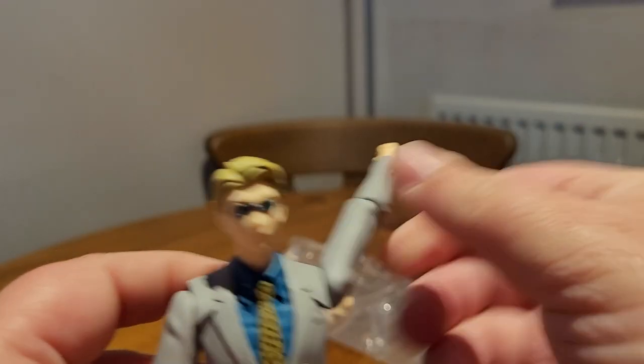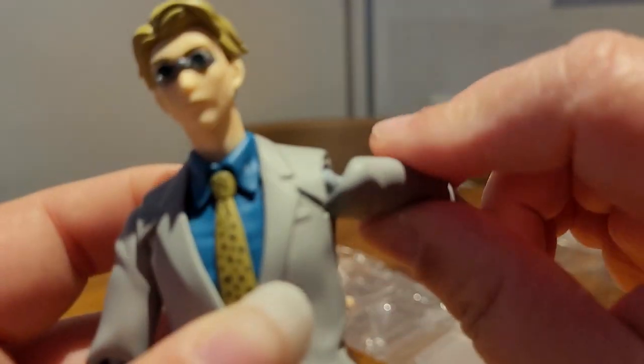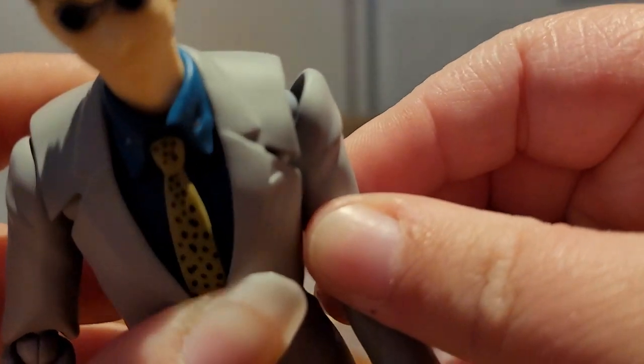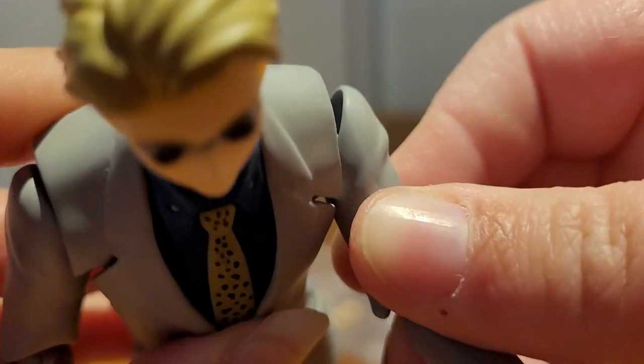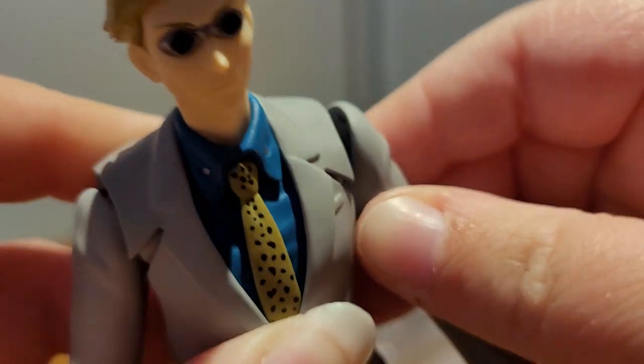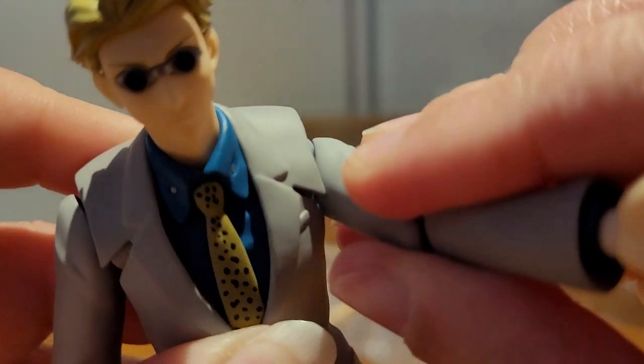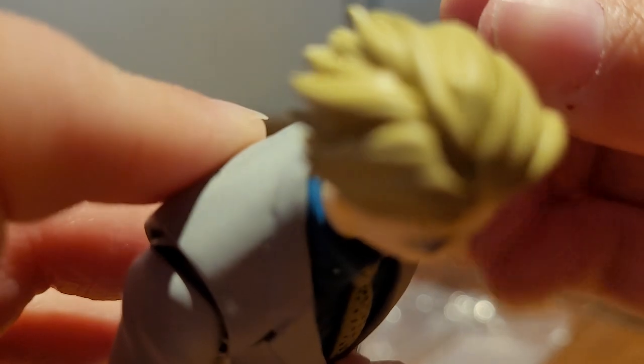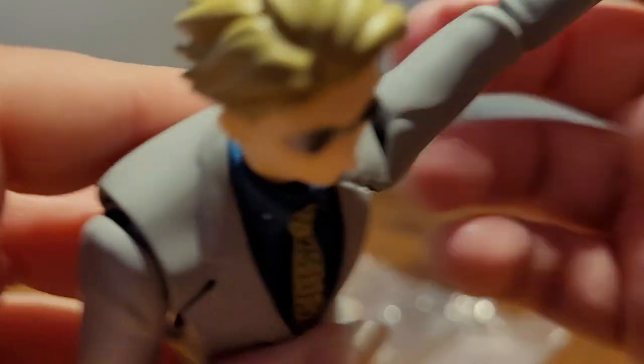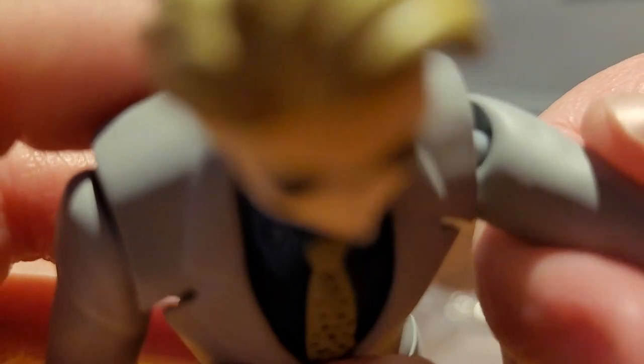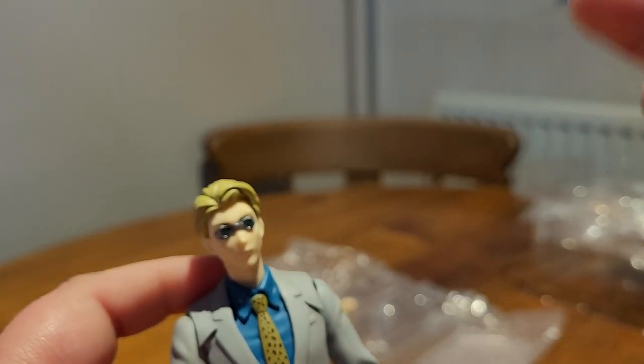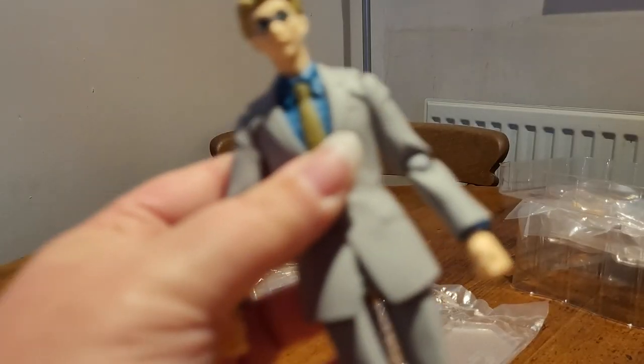So the arms can do a full 360 as to be expected in figmas. But I don't know if that is doing a full 360 on that figma joint or if it's doing a 360 on the ball joint. Okay. It's doing a full on one of the joints. We'll leave it at that.